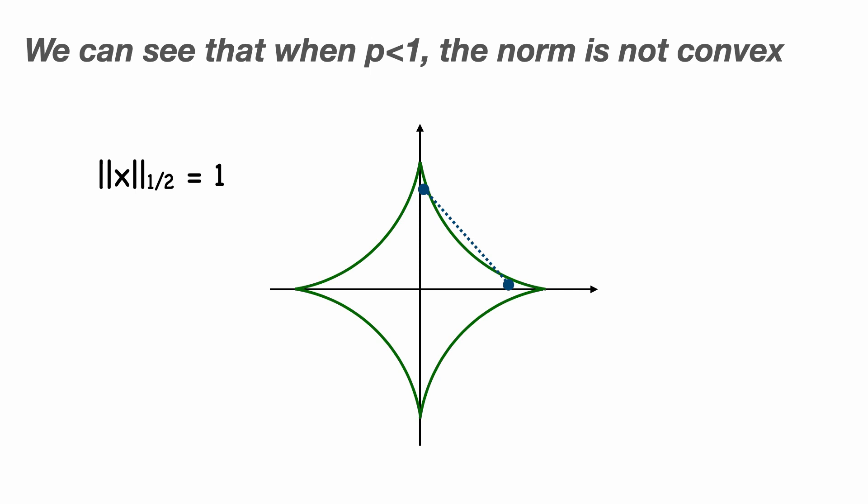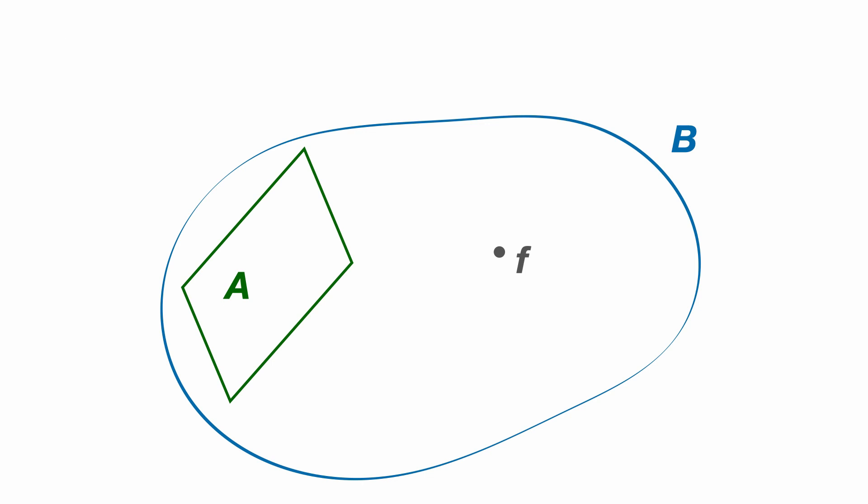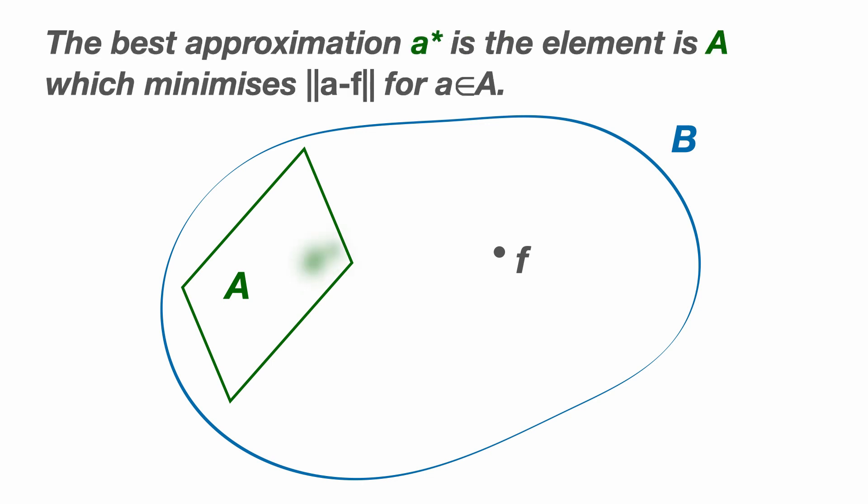What is it about convexity that is so crucial that it's almost a requirement? Well, let's say we have a convex subset capital A of a normed linear space capital B from which we want to find the best approximation to F, a point in capital B. The best approximation is a point A star in capital A which minimizes the norm of A minus F. In other words, the closest point in capital A to F.